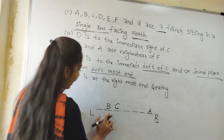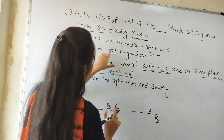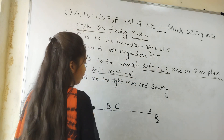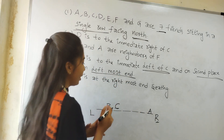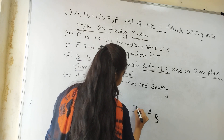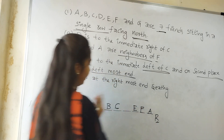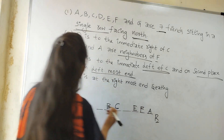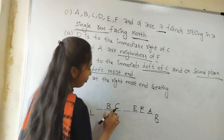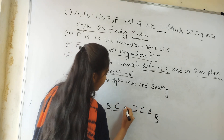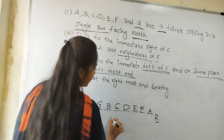B is to the left of C at second place. E and A are neighbors of F — meaning F has E on one side and A on the other side. A is on the right side, so E is placed next to F. Next, D is to the immediate right of C. So this is the answer.